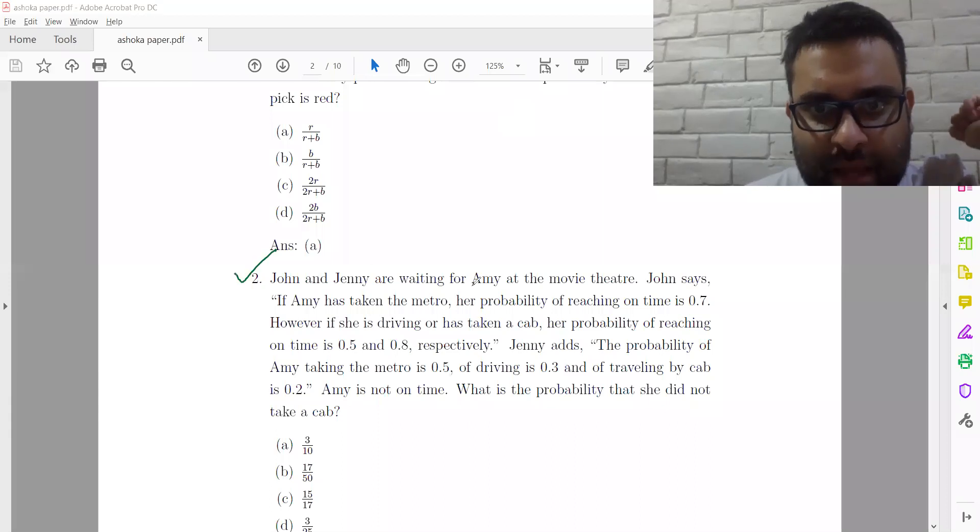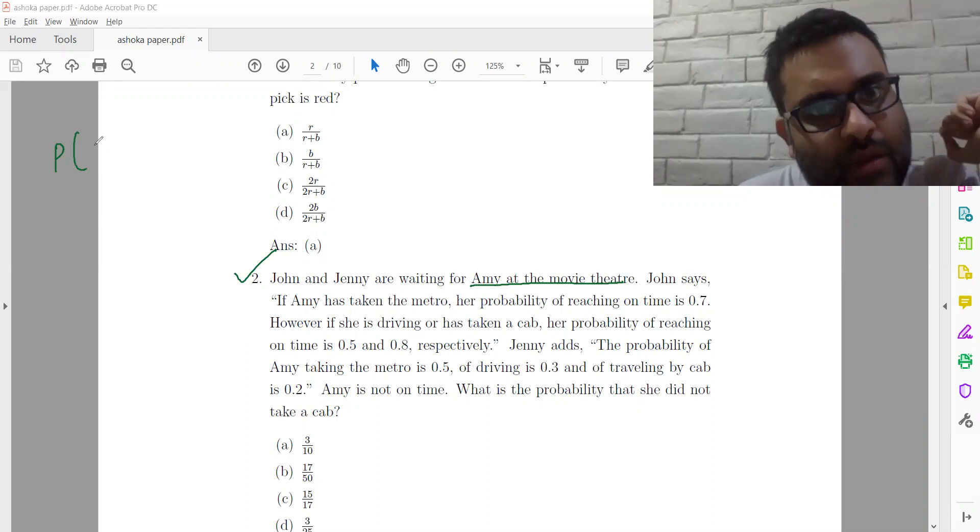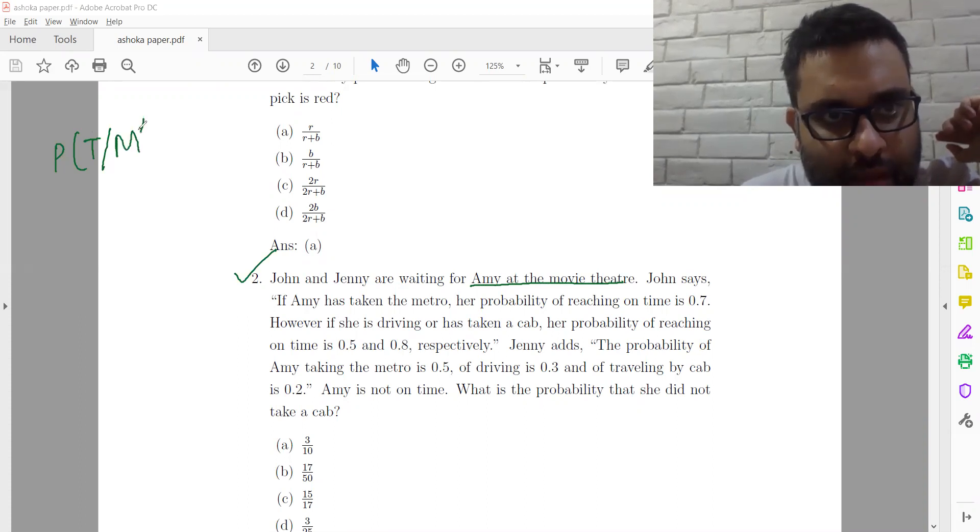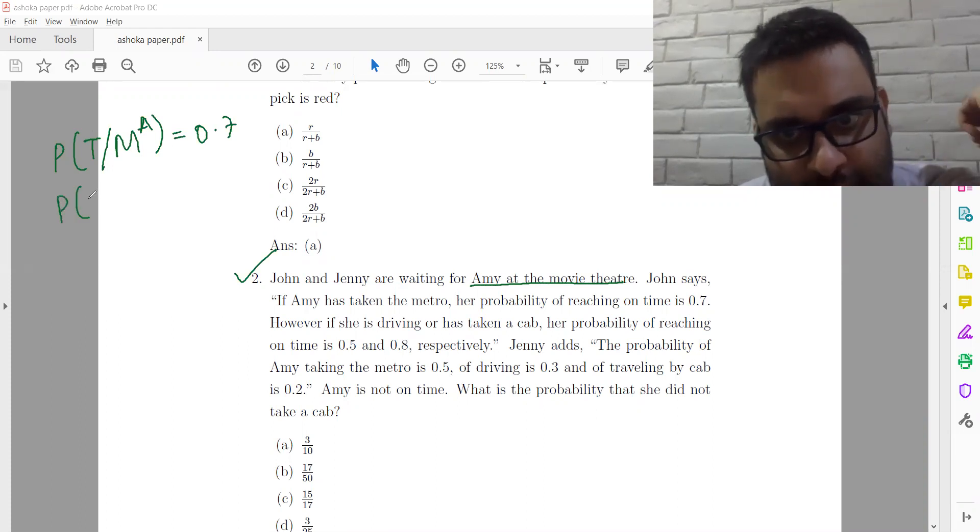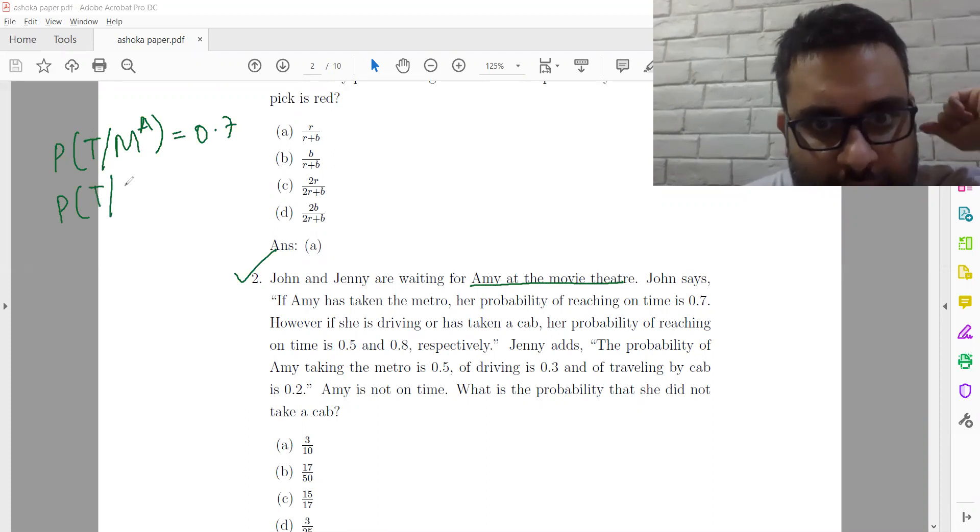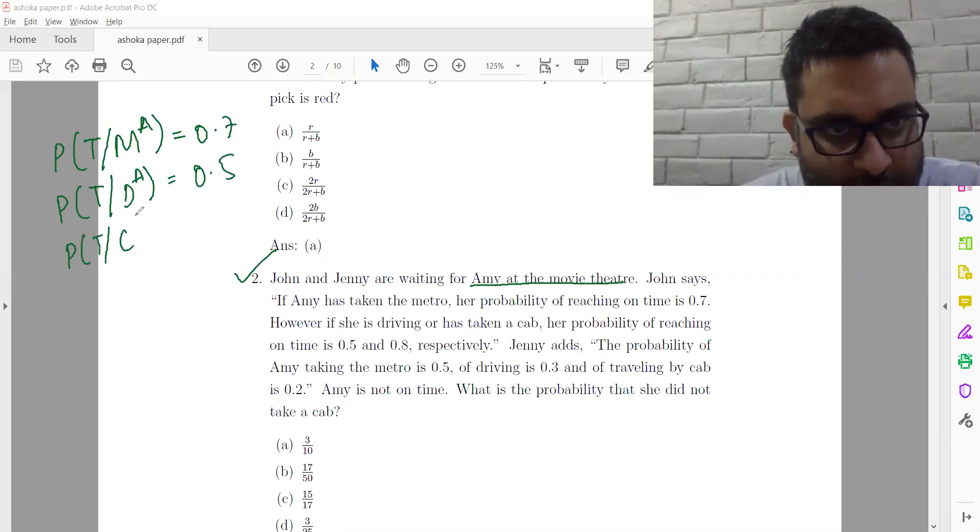John and Jenny are waiting for Amy at the movie theater. John says if Amy has taken the metro, her probability of reaching on time is 0.7. If Amy has taken the metro, probability reaching on time, metro for Amy, 0.7. However, if she is driving or has taken a cab, her probability of reaching on time when Amy has driving. So driving Amy 0.5 on time, cab Amy 0.8.